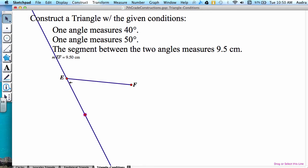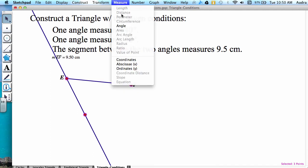So I'm going to highlight the new point, and then E, which is where my vertex is, and then F. And go to measure angle.